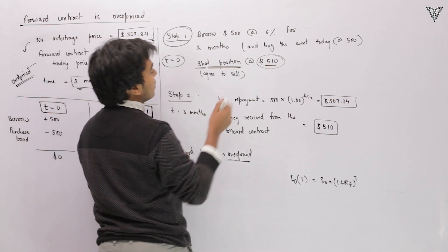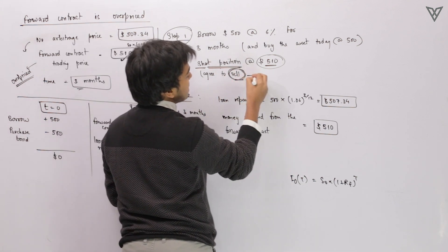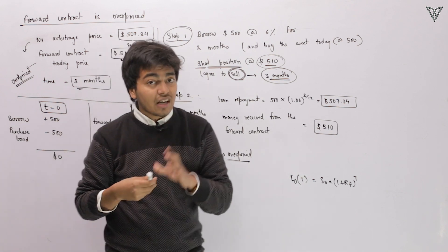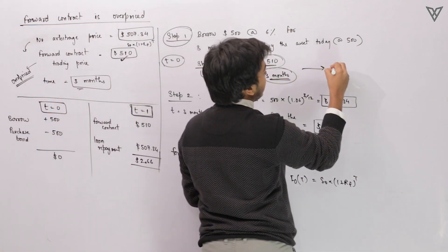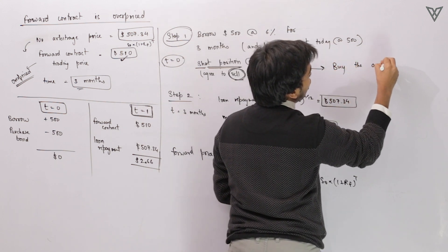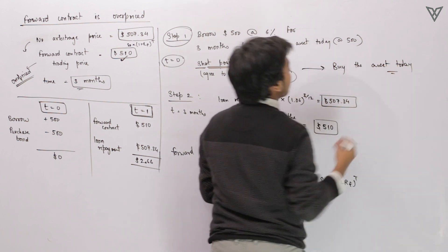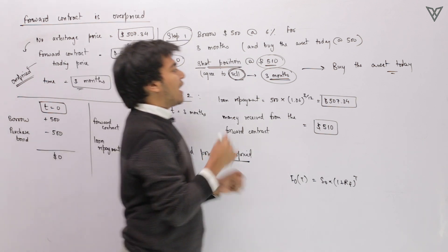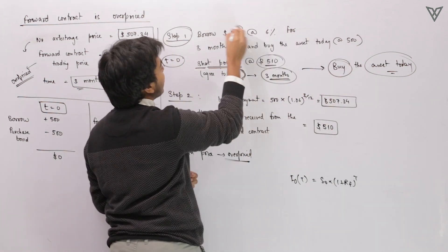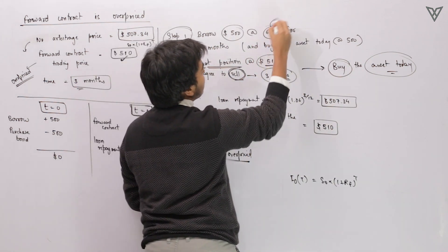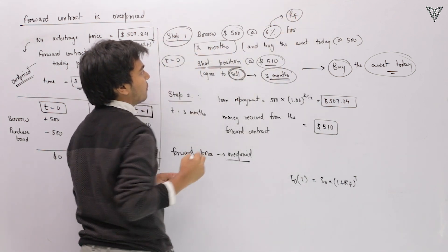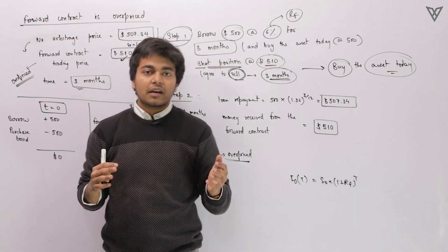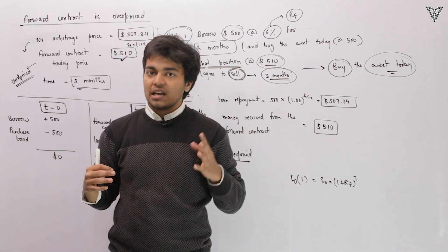In a short position, we have to sell the asset after 3 months. It is necessary that we have the asset at that time, so we'll have to buy the asset today. Since we are talking about a no-arbitrage principle, we won't be putting any cash from our own pocket. To buy the asset, you take a loan — you borrow $500 at 6%, which is the risk-free rate, for 3 months. Now you have $500, which you've borrowed, and you go into the market at time period 0 and purchase the asset.